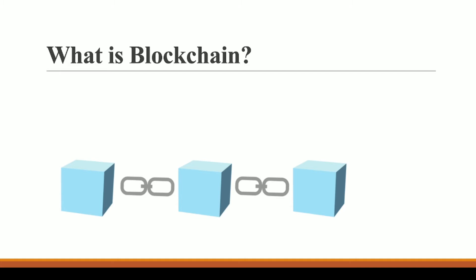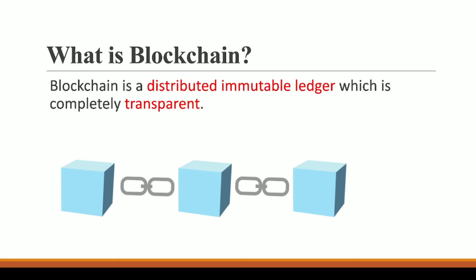Blockchain is a distributed immutable ledger which is completely transparent. Let me repeat it for you: blockchain is a distributed immutable ledger which is completely transparent.